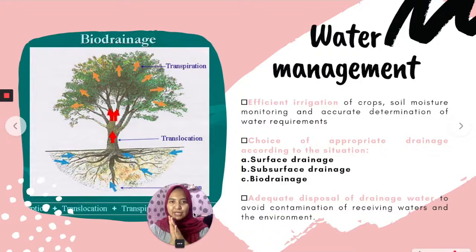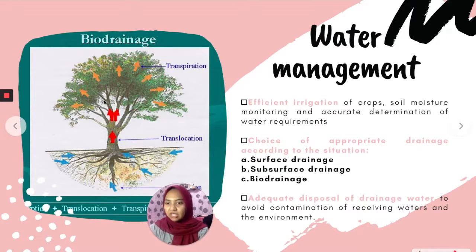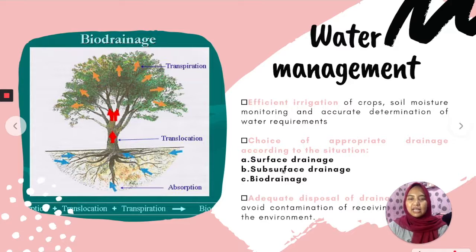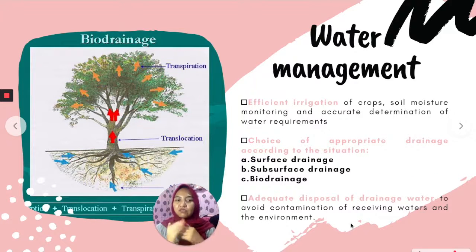For water management, strategies include efficient irrigation of crops, soil moisture measuring, accurate determination of water requirements, and choice of appropriate drainage according to the situation. As you can see in this picture, this is biodrainage — a combination of transpiration and absorption. Examples of drainage include surface drainage and biodrainage, with biodrainage being the most efficient. Finally, adequate disposal of drainage water is important to avoid contamination of residual waters and the environment.